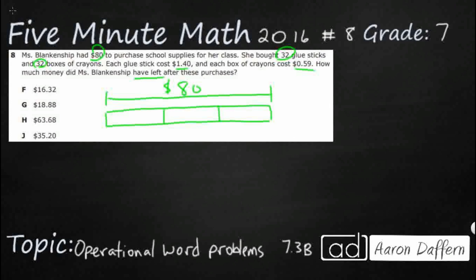We've got 32 glue sticks, and the glue sticks are $1.40 each, so I'm going to do 32 sets of $1.40. She also has 32 boxes of crayons at $0.59 each, not nearly as much. And then we've got change. That's what we're looking for, that missing amount, and all of that adds up to $80.